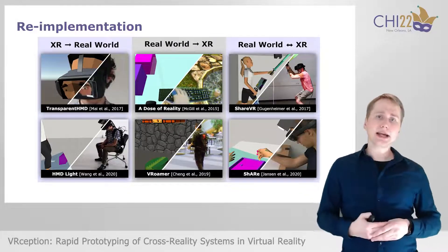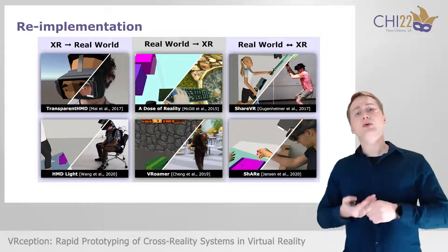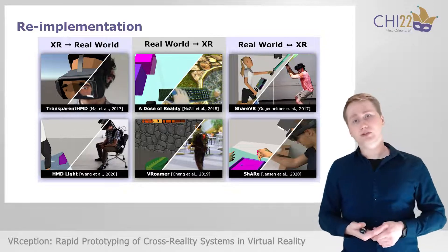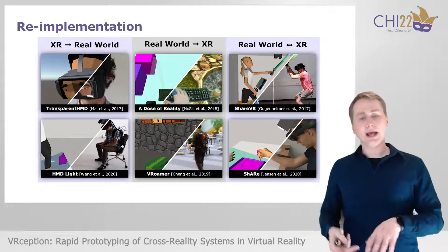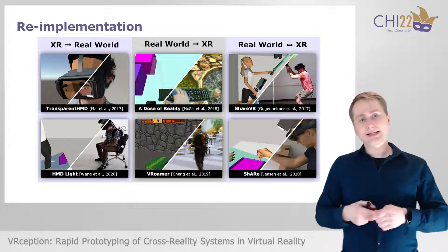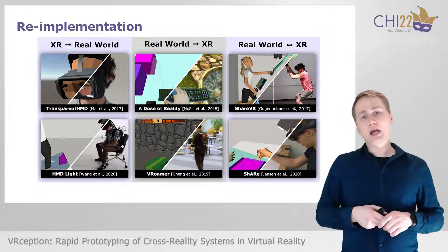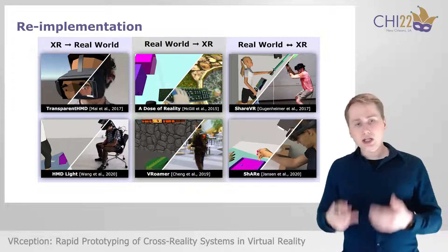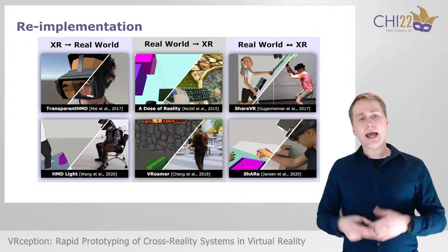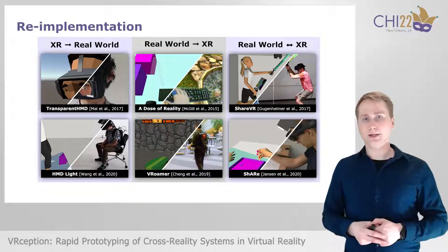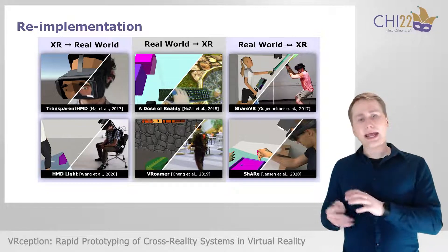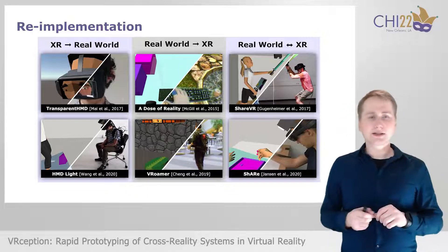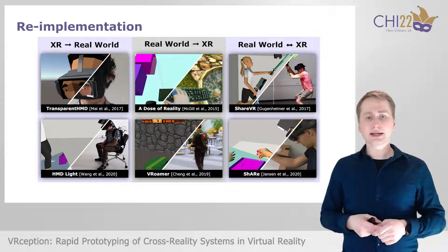To better understand the potential of the VRception concept and toolkit, we replicated six different cross-reality systems proposed in previous work. Following a brief literature review, we identified three categories in which these systems can be classified: XR to the real world, the real world to XR, and bidirectional systems that work both ways. For each of the three categories, we selected two systems and re-implemented them using our toolkit. The original system is visible in the right half of the picture, and our re-implementation is visible in the left half.